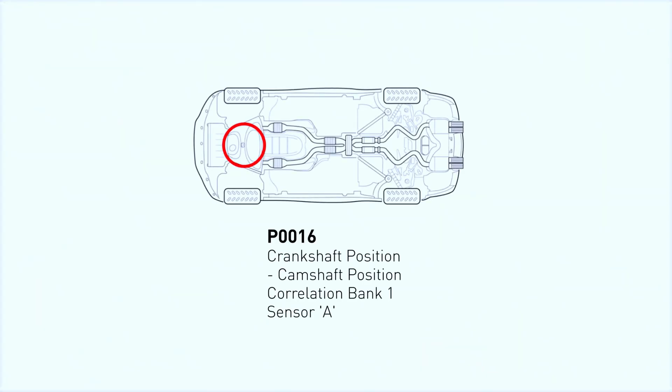The P0016 code stands for Camshaft Position A Camshaft Position Correlation Bank 1, which means your crankshaft and camshaft are not in sync. Some of the common causes include a damaged timing chain or belt, a faulty camshaft or crankshaft reluctor wheel, and a bad camshaft or crankshaft sensor.